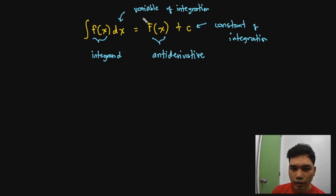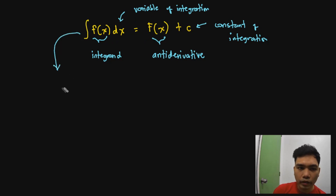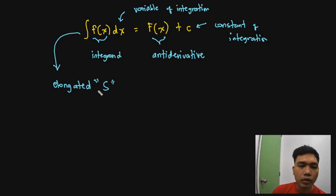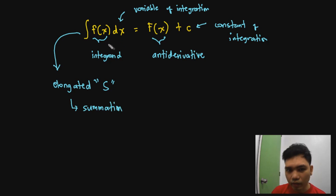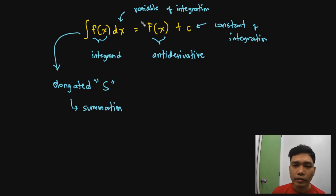Knowing these parts of an integral expression, the last one would be this symbol — an elongated S. It's not an L but an S. That elongated S symbolizes the term summation.